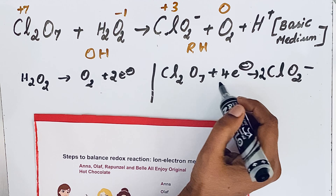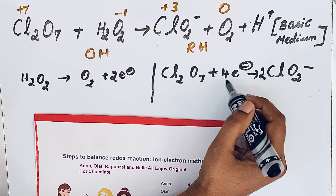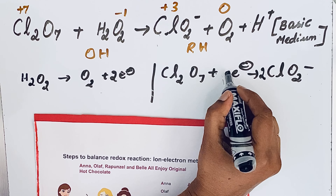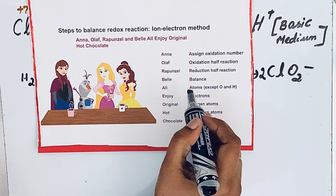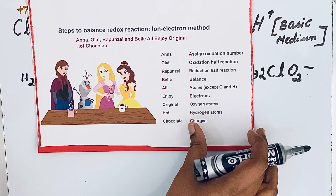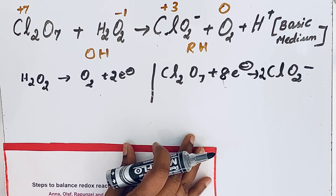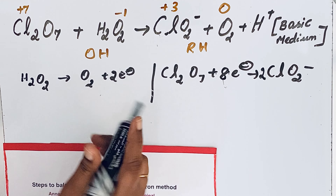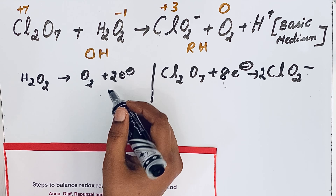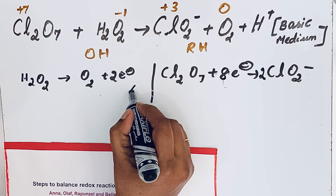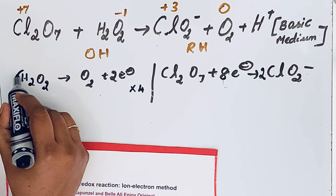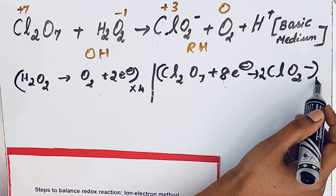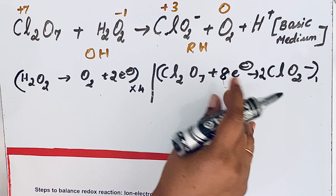When you write the coefficient of 2 for ClO₂⁻, the number of electrons also changes: per chlorine atom it was four electrons, but with two chlorine atoms it becomes eight electrons. This step is very important. After balancing atoms, we balance electrons, because in redox reactions the number of electrons lost must equal the number gained. Here we have eight electrons on the reduction side but only two on the oxidation side, so we multiply the oxidation half-reaction by four. We rewrite the reaction accordingly.